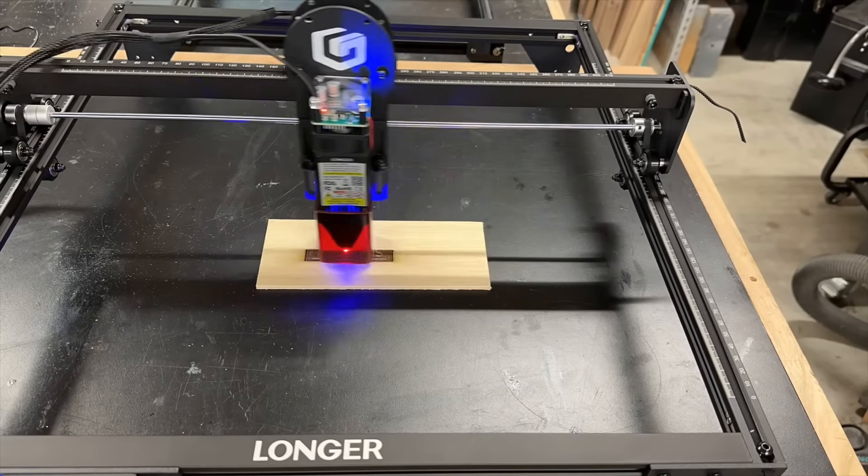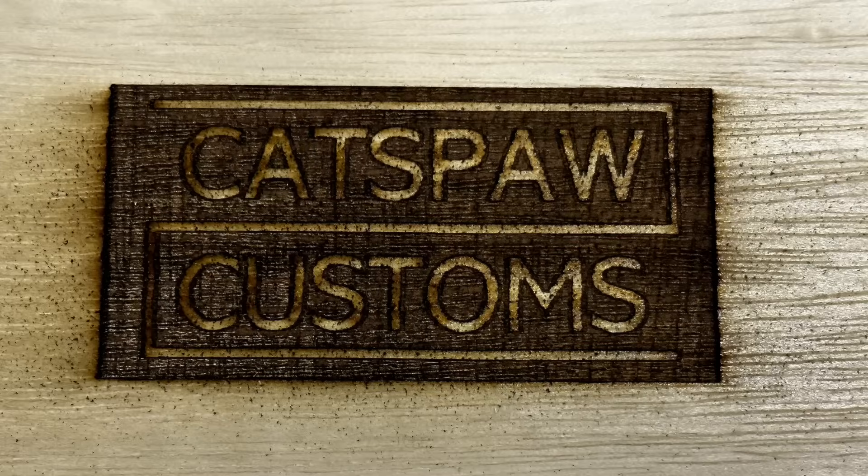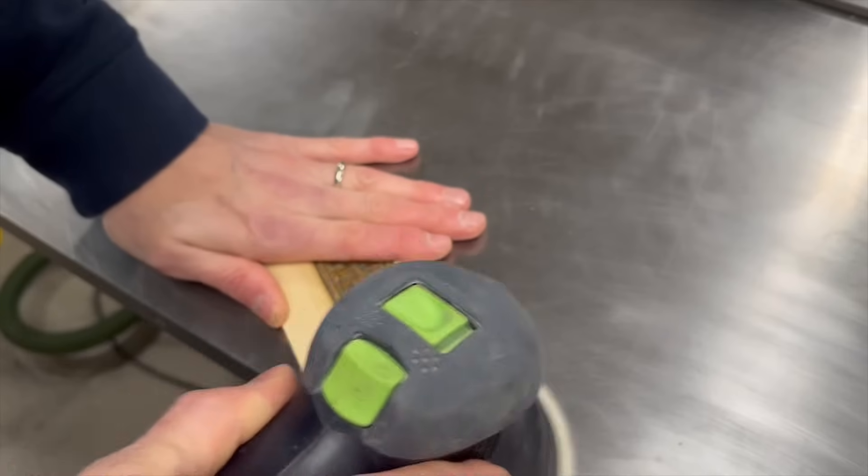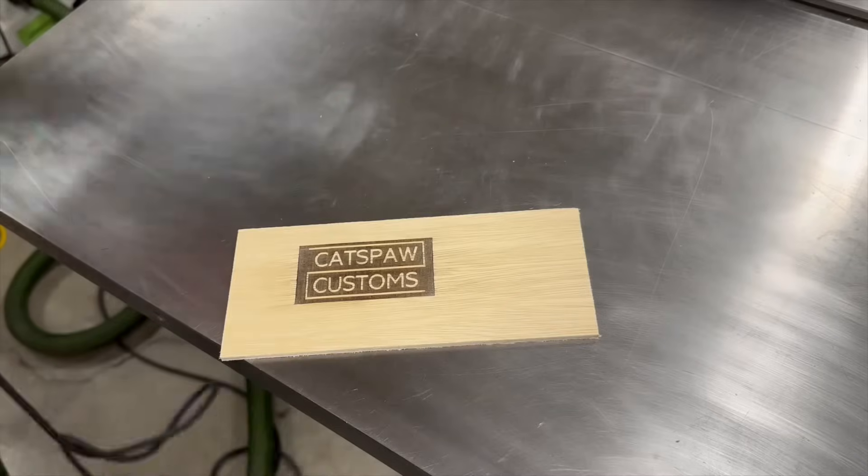To get an idea of how long these take this initial engraving took about 8 minutes. The results were OK but clearly my settings need some work. I cleaned up the test piece with a sander and while it looked a lot better I clearly needed more practice with this machine.